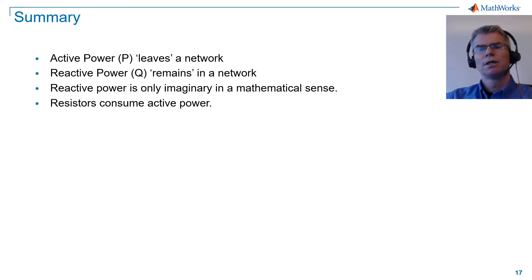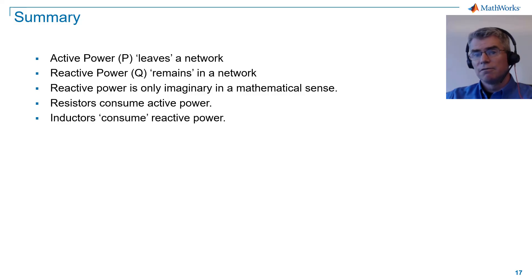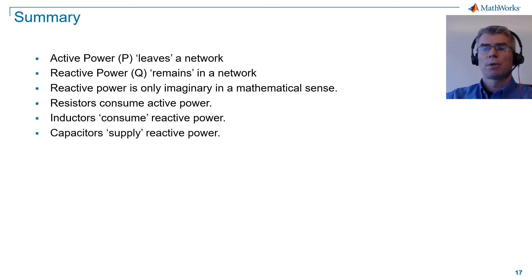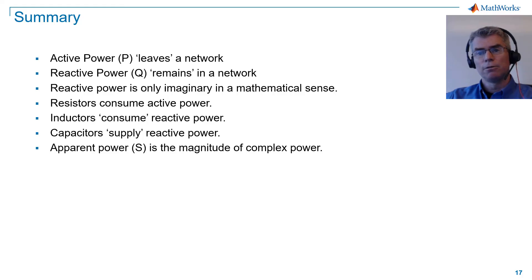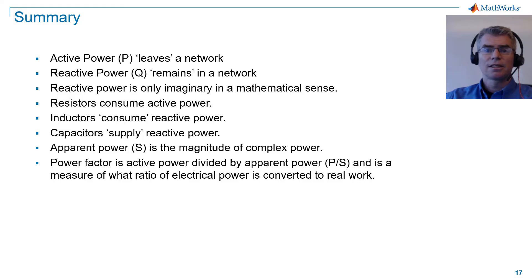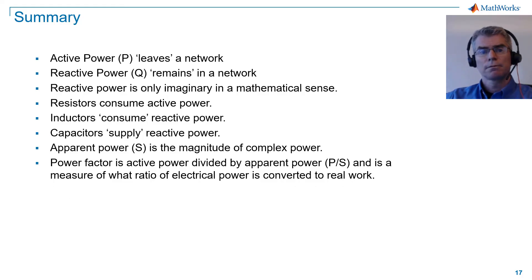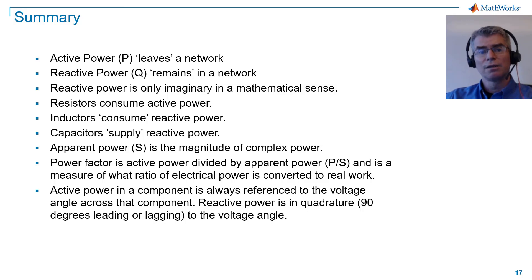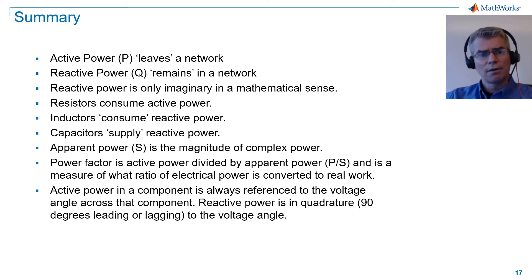Resistors consume active power, and active power measures positive for consumption. Inductors consume reactive power — this is convention, as inductive reactive power measures positive. Capacitors supply reactive power — again, this is convention, as capacitive reactive power measures negative. Apparent power is the magnitude of complex power. Power factor is active power divided by apparent power, and it's a measure of what ratio of electrical power is converted to real work. Active power in a component is always referenced to the voltage angle across that component; reactive power is in quadrature — 90 degrees leading or lagging to that voltage angle. I hope this information has proven useful. Thank you for listening.